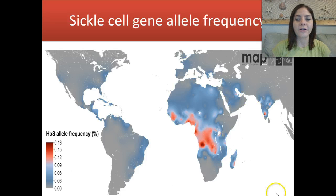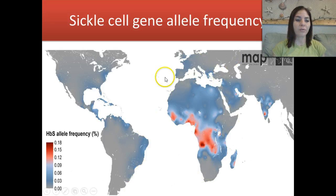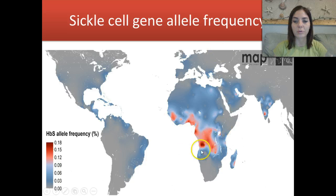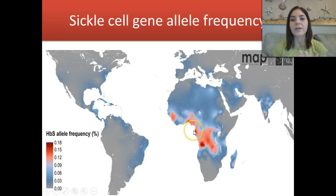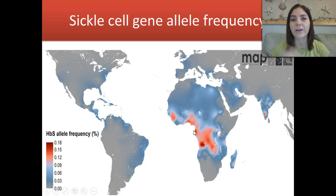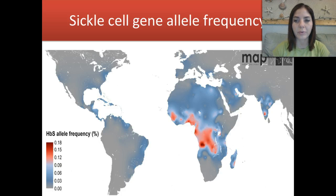Looking at this global map, it shows where the allele is most frequent. You can see in Africa the heterozygous advantage really shows up, corresponding to regions with high prevalence of the malarial parasite.